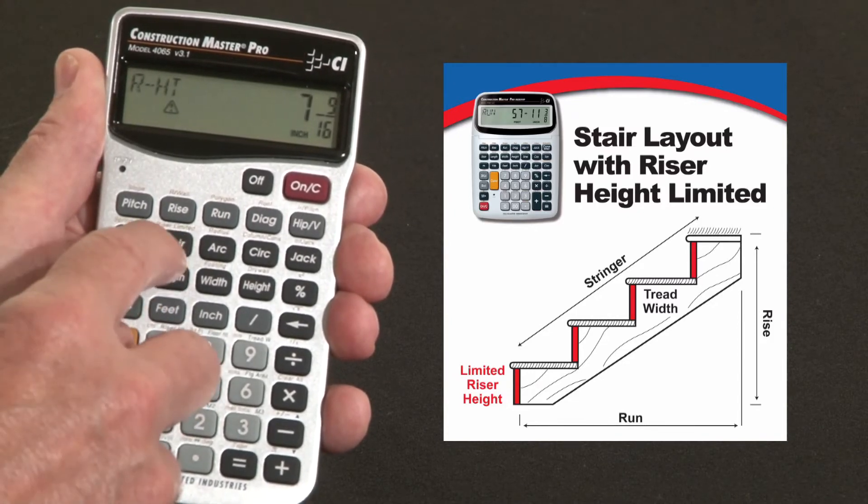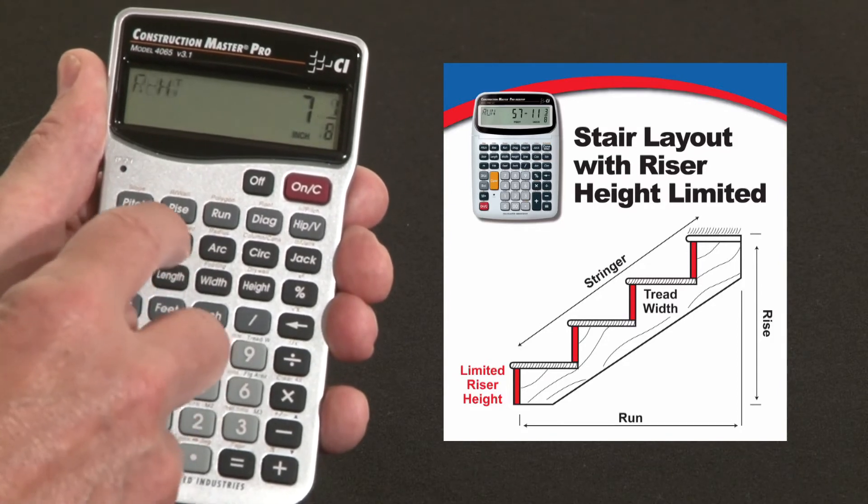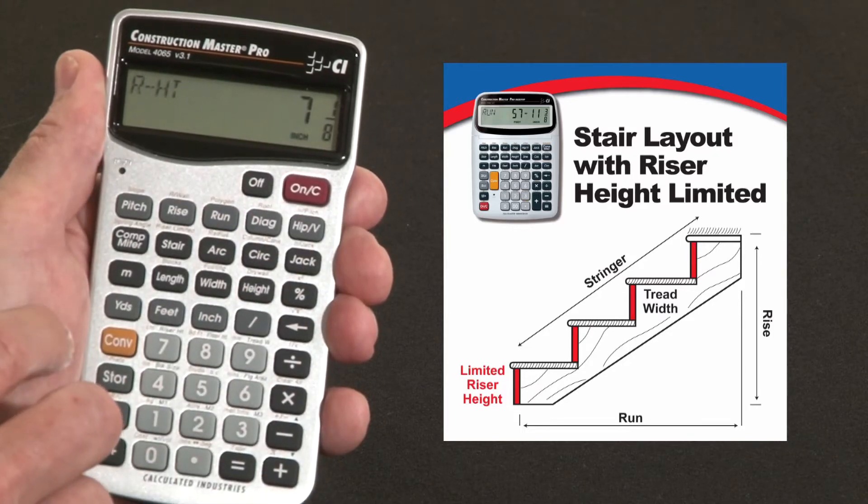So what you do is hit convert stair. Above the stair key you can see it says riser limited. So convert stair. Now it recalculated, and the riser heights are going to be seven and one-eighth inches only.